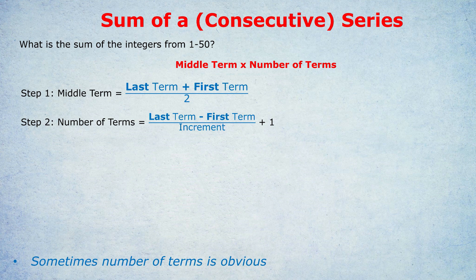Either way, that's the formula. Last term, take away first term, that's the range. Range divided by increment, and then plus 1 at the end because it's always inclusive. That's how to find the number of terms.